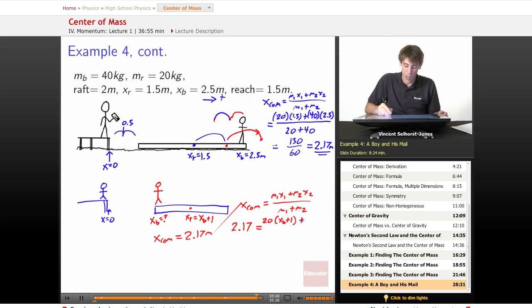Plus m2, the boy's mass is 40 times the location of the boy. Don't know where it is yet, but we will soon. The sum of the masses is 60.